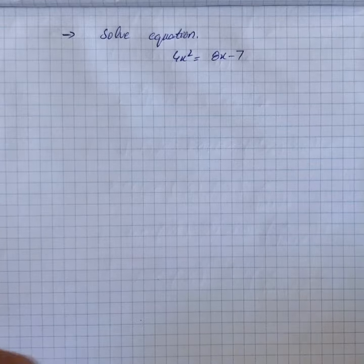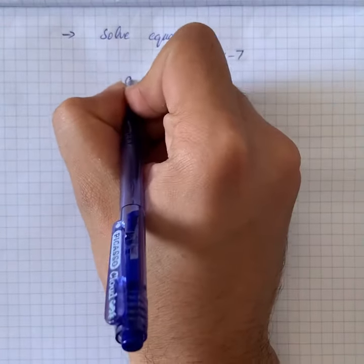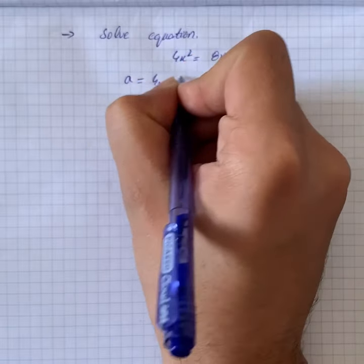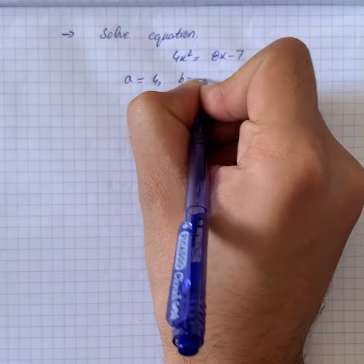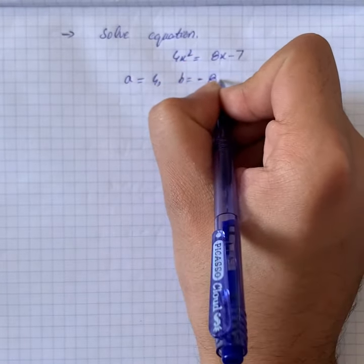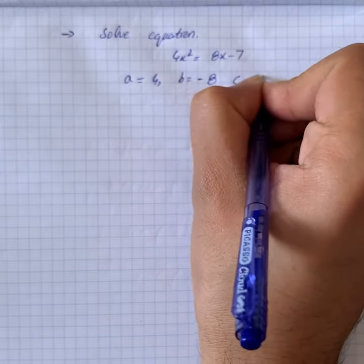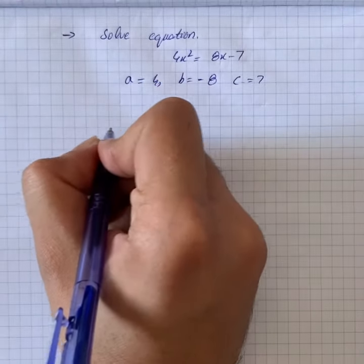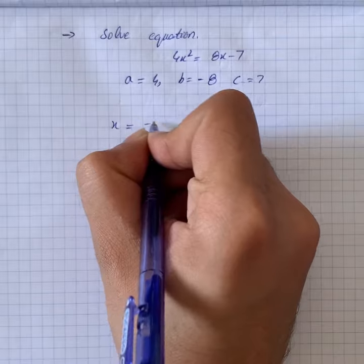Here we have to solve the equation. First of all, we will write a is equal to 4, b is equal to minus 8, and c is equal to 7. So we can write that from the quadratic formula, x is equal to...